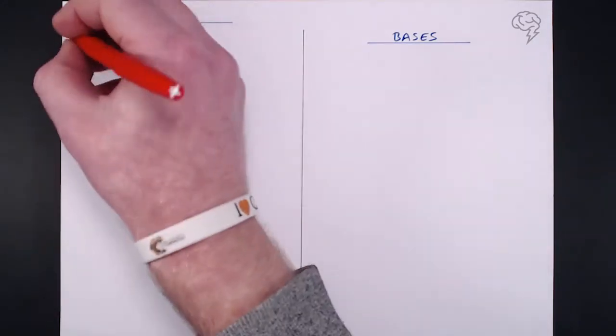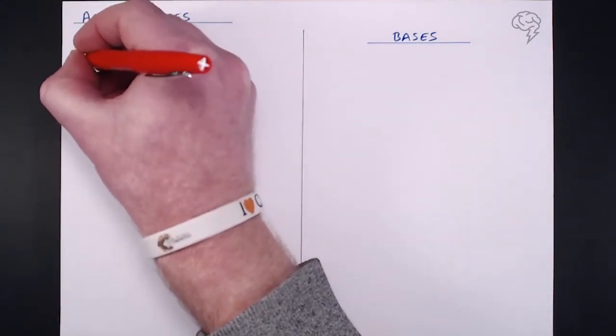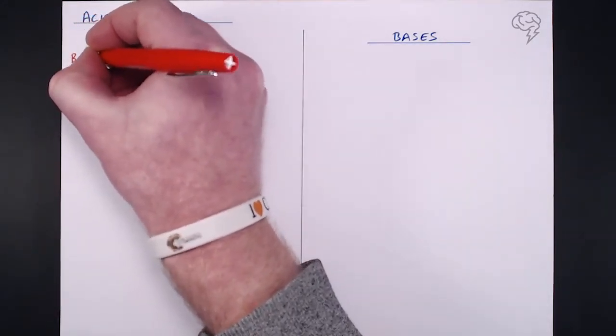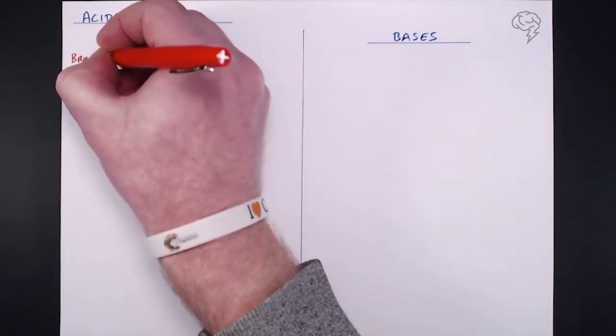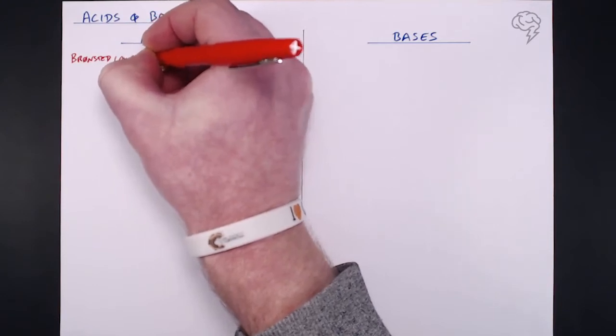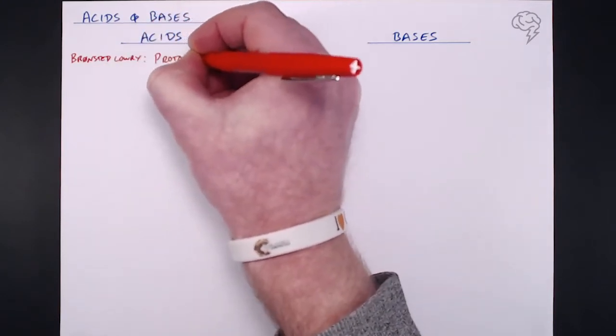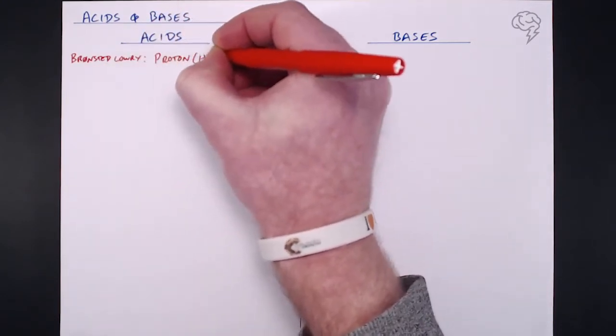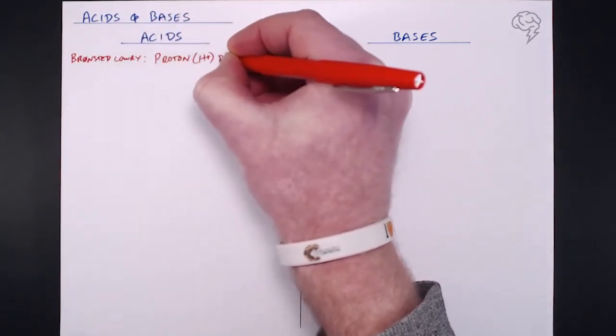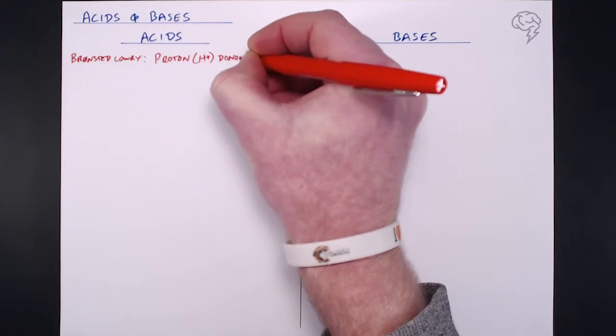So basically, what is an acid? According to our Bronsted-Lowry definition of an acid, it's a proton donor. So acids donate hydrogen ions.